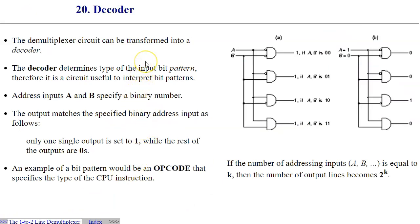Another circuit that I'd like to go over is the demultiplexer circuit that can be transformed into a decoder. A decoder determines the type of the input bit pattern and then essentially indicates which one of the patterns is currently active.